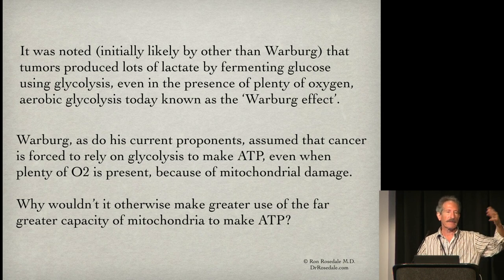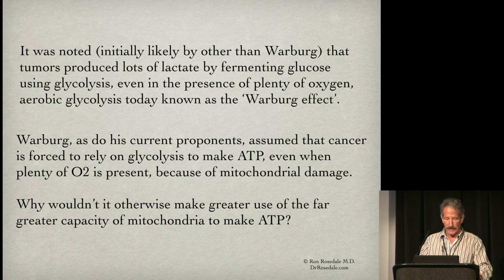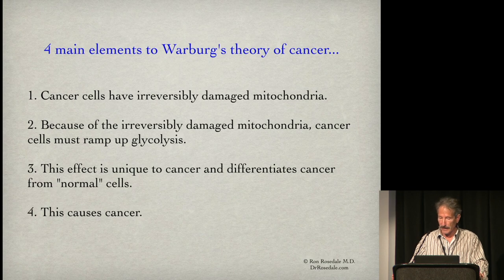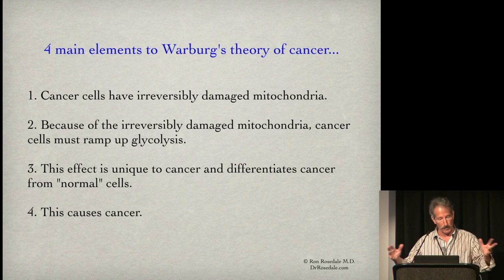Warburg's theory is now being resurrected as the genetic theory of cancer is also being questioned. There are four elements to Warburg's theory: that cancer cells have irreversibly damaged mitochondria; that because of this, cancer cells must ramp up glycolysis; that this effect is unique to cancer and differentiates it from normal cells; and that this causes cancer. We're going to look at all four of those.